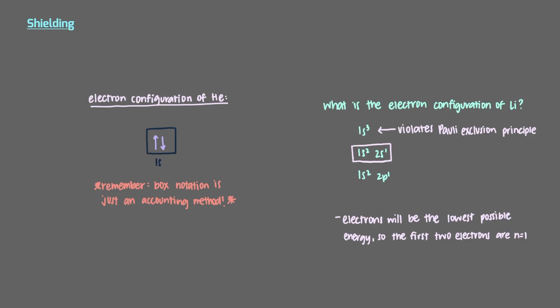So that means it needs to be n equals 2. But what type of n equals 2 electron? 2s or 2p? Up until now, we've said that 2s and 2p are the same energy because they're both n equals 2.